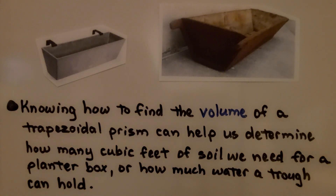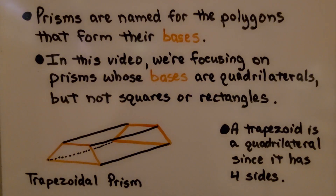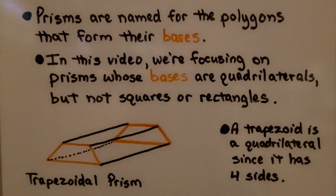Knowing how to find the volume of a trapezoidal prism can help us determine how many cubic feet of soil we need for a planter box, or how much water a trough can hold. Prisms are named for the polygons that form their bases. In this video, we're focusing on prisms whose bases are quadrilaterals — specifically trapezoidal prisms. A trapezoid is a quadrilateral since it has four sides.